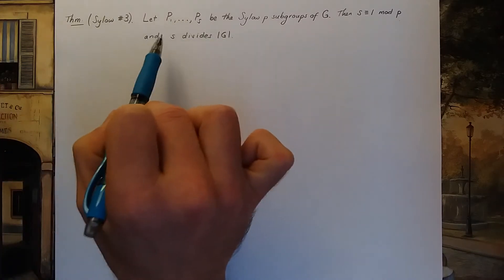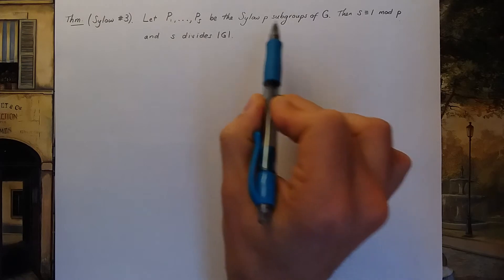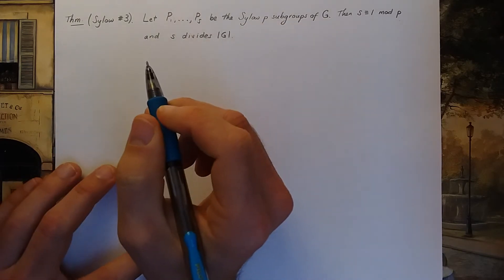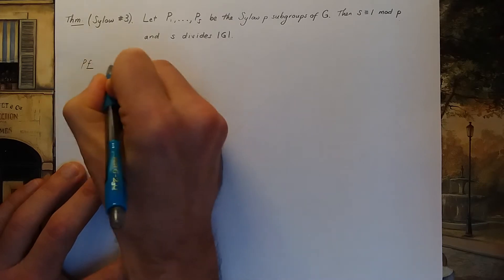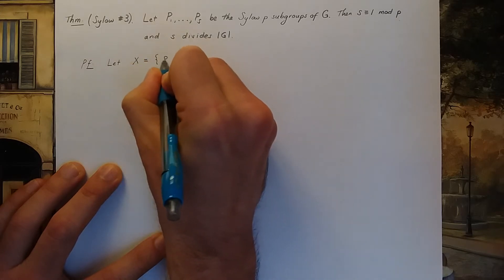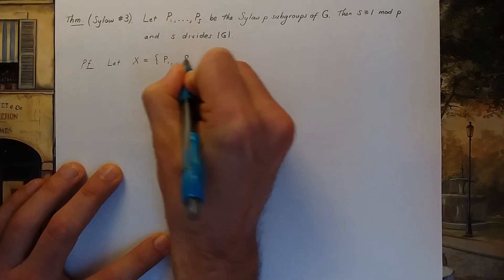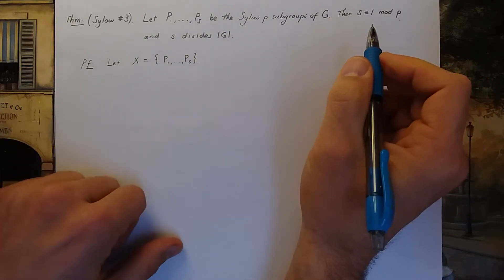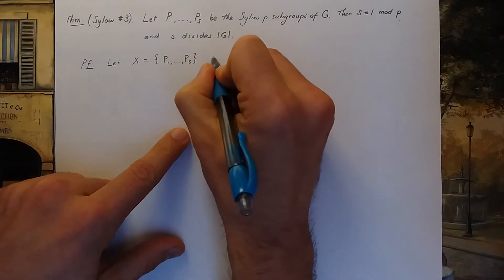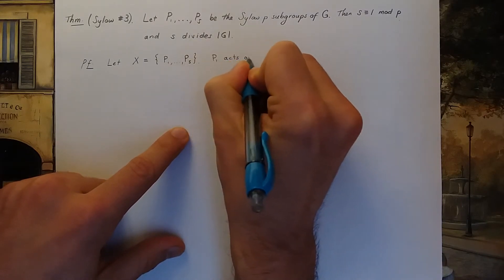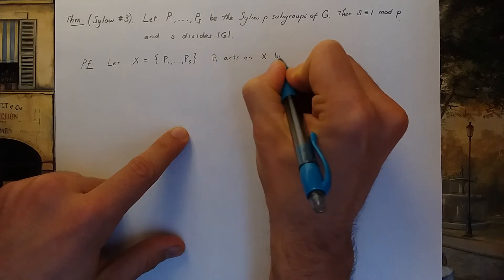So this gives you information about the number of possible CELO p-subgroups. Here's a proof. Again, we're going to use group actions. I'm going to let X be the set of all these CELO p-subgroups. So there's my set X, and I'm going to say that P₁ acts on X by conjugation.